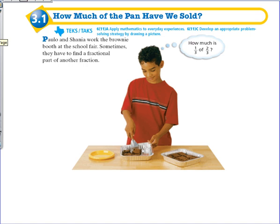The situation that we're going to be using to model fraction multiplication is going to be brownie pans. So imagine Paulo and Shania working at a brownie pan booth at a school fair. Sometimes they have to find a fractional part of another fraction, so a part of a pan of brownies. So Paulo is sitting there thinking how much is one third of two thirds?